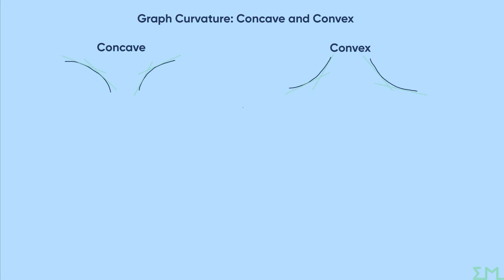Concave and convex are words used to describe how a graph actually curves. You will have already learned about increasing and decreasing for functions — that's when a curve is going down or going up — and that is all dependent on the gradient function, which is what you get when you work out the first derivative. But we can go a bit deeper than that and work out how a curve is going up or going down. If we have a look at these examples on the screen, concave is your going-over type of graph.